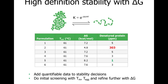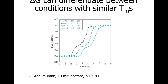UNCLE can obtain Delta-G using isothermal chemical denaturation, which essentially looks at changes in protein intrinsic fluorescence as we add denaturants such as urea or guanidinium hydrochloride. Here you can see chemical denaturation curves with two distinct unfolding transitions for a monoclonal antibody at three different pH conditions: 4, 4.3, and 4.6. Stability analysis with Delta-G identifies 10 mM acetate buffer at pH 4.6 as having the highest Delta-G and therefore the most stable formulation. UNCLE's multimodal capabilities allow for stability testing at both qualitative and quantitative levels.